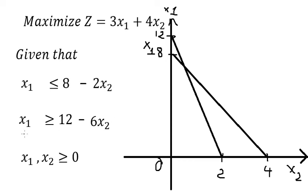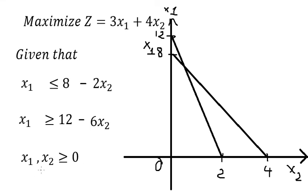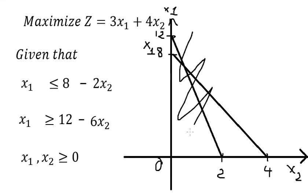The area where S1 is greater than or equal to 12 minus 6S2 should be in here. And we know that S1 and S2 are positive numbers, so the feasible area should be about this region in here.